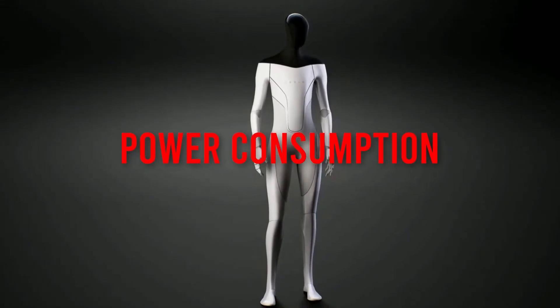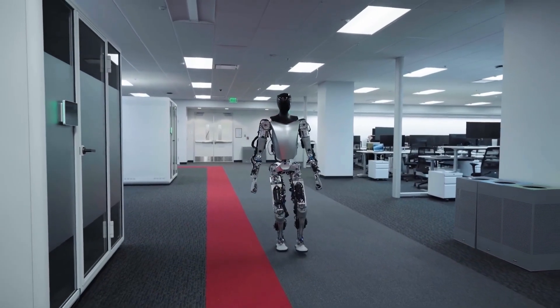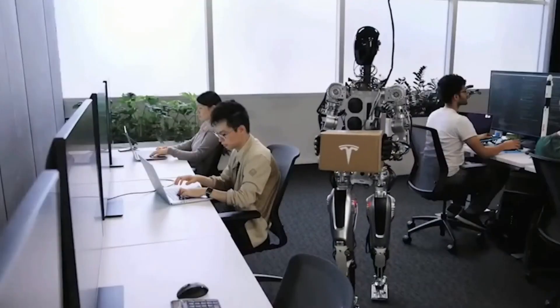Power consumption: Optimus consumes about 100 watts while sitting, 500 watts while walking, and up to 1500 watts while running or lifting heavy objects.